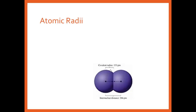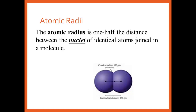The definition of radius — the official definition is the half the distance between two identical joined atoms. But you know what? You just need to know a radius is size. It's perfectly fine to think of radius like the size of a ball. The larger the radius, the larger it's going to be.